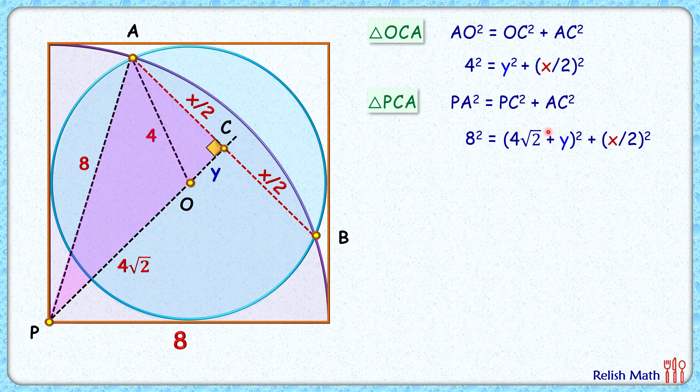Now to solve these two equations let's subtract these two equations. From second equation we will subtract our first equation. So LHS will be 8² - 4². RHS will be (4√2 + Y)² - Y² and (X/2)² - (X/2)² will get cancelled down.